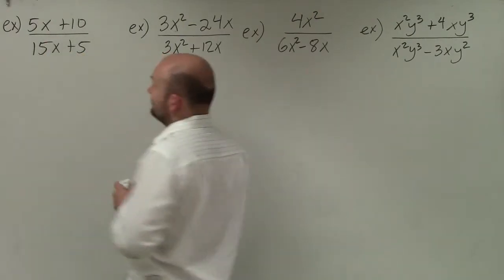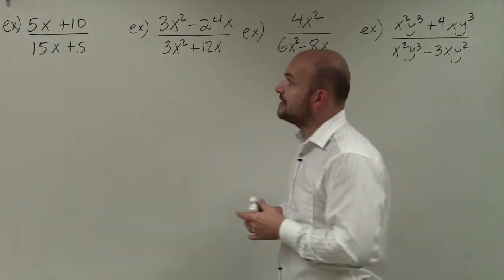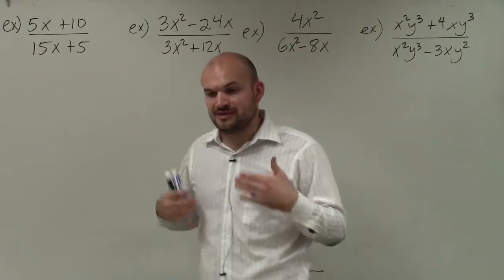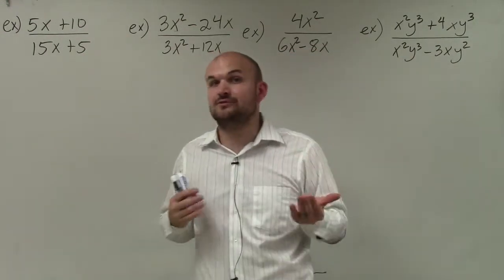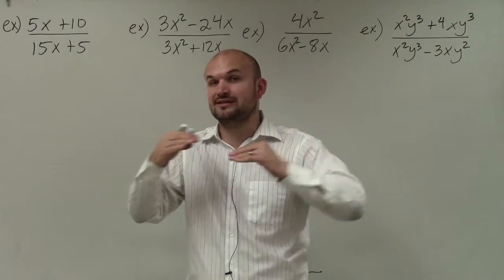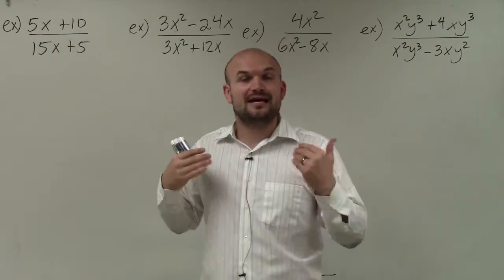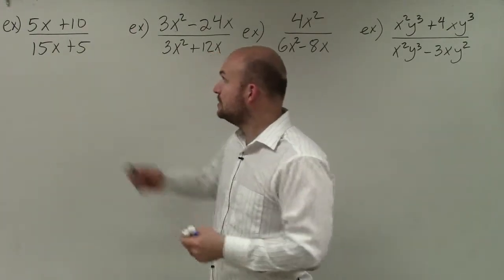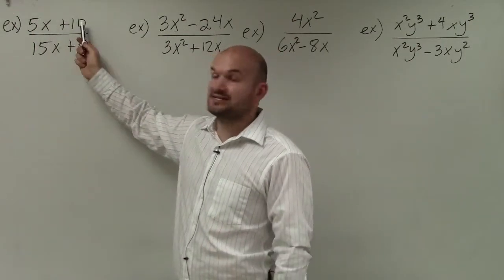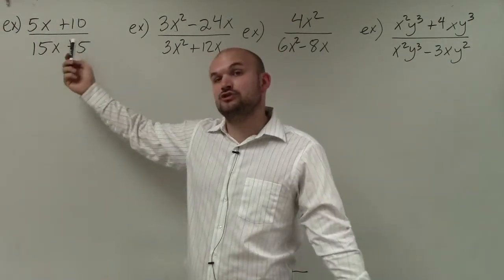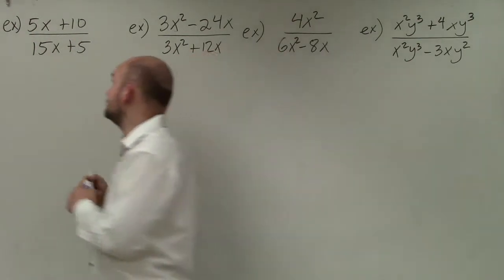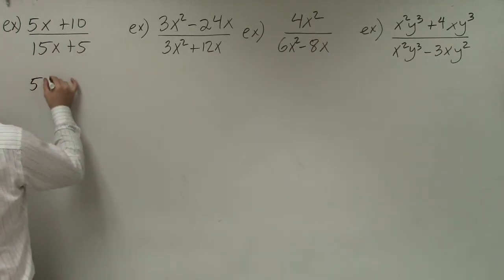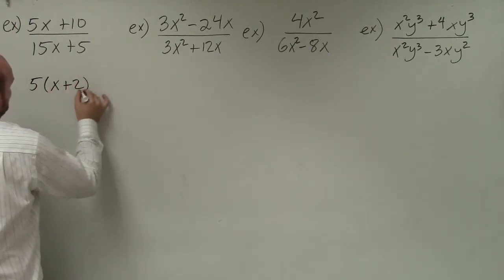In the first example, I have 5x plus 10 divided by 15x plus 5. When solving by factoring, the first thing we do is look at the numerator and denominator separately and determine what we can factor out. In the numerator, you can see that 5x and 10 both share a 5, so I can factor out a 5, and what I'll obtain is 5 times x plus 2.